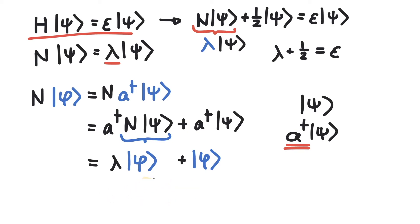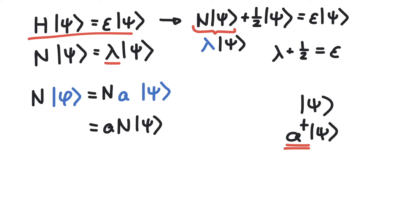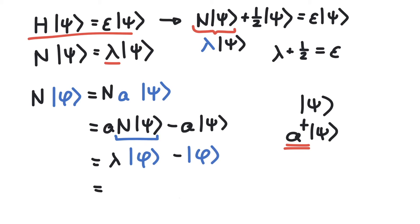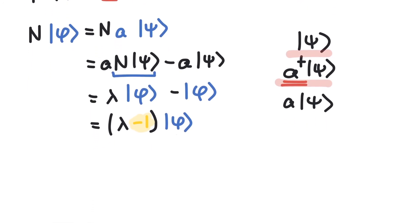We can do the same calculation using a instead of a dagger, so our new state phi is now a acting on psi. Using the commutator of N and a, we write this as a N psi plus the commutator, which is minus a times psi. Since N on psi gives lambda times psi, switching back from a psi to phi shows that phi is an eigenvector of the number operator, this time with a lower eigenvalue.